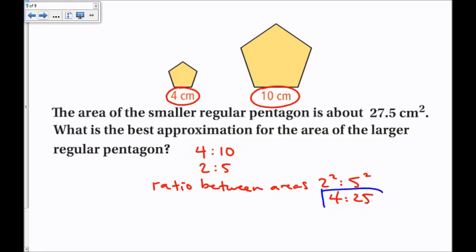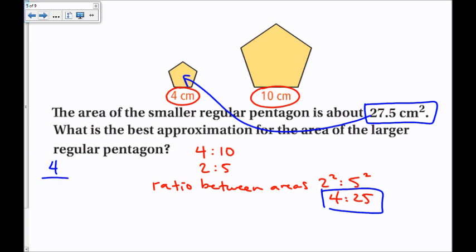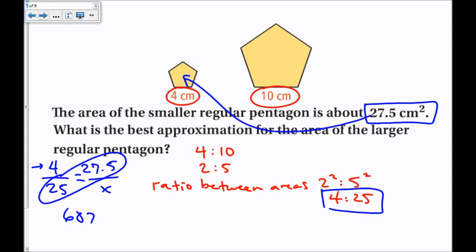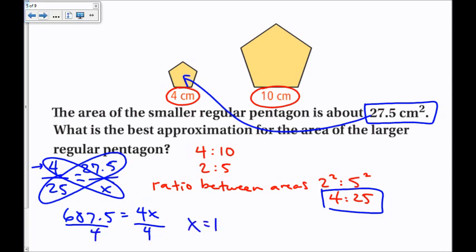The ratio between the areas is 4 to 25, and I have one of them — specifically the smaller one. So I set up a proportion: 4 to 25 equals 27.5 over x. Cross multiplying: 25 times 27.5 is 687.5, equals 4x. Dividing both sides by 4, x equals 171.875 square centimeters.